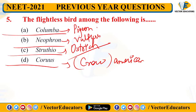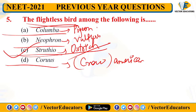Pigeon can fly, vulture can fly despite its heavy body, crow can fly — so the flightless bird is Struthio, which means ostrich. Remember: Columba = pigeon, Neophron = vulture, Struthio = ostrich, Corvus = crow. The correct answer is Struthio.